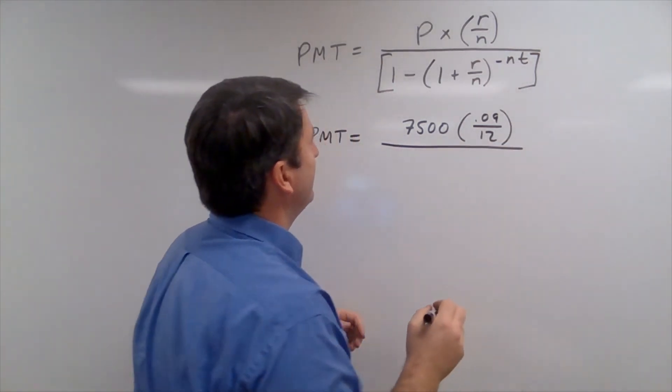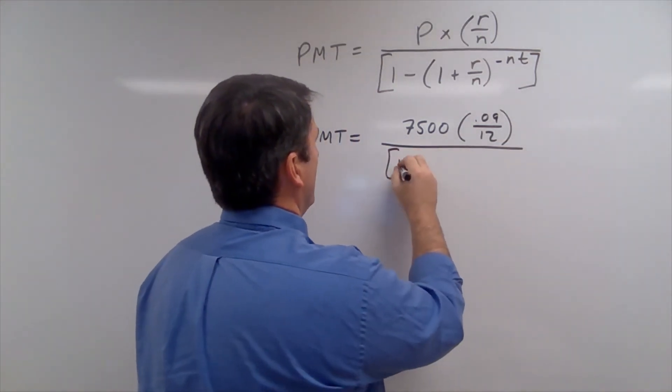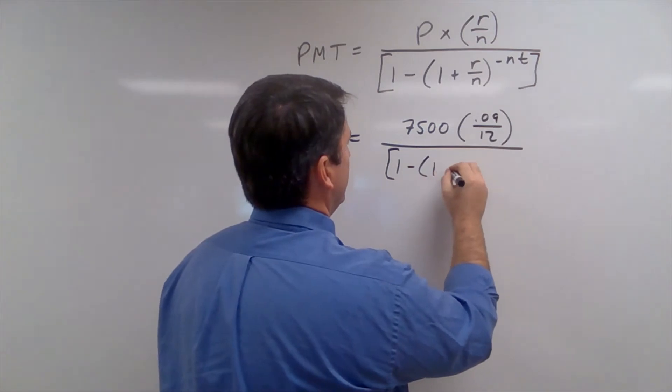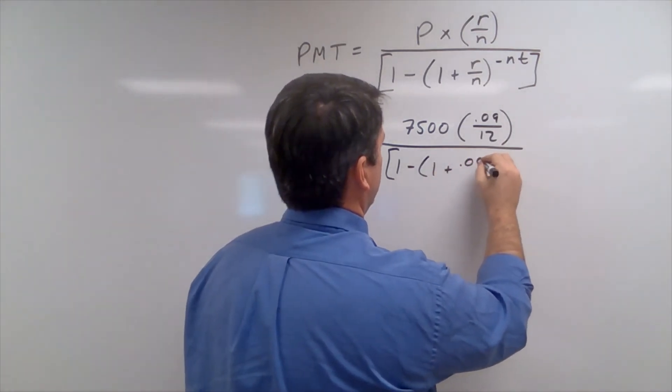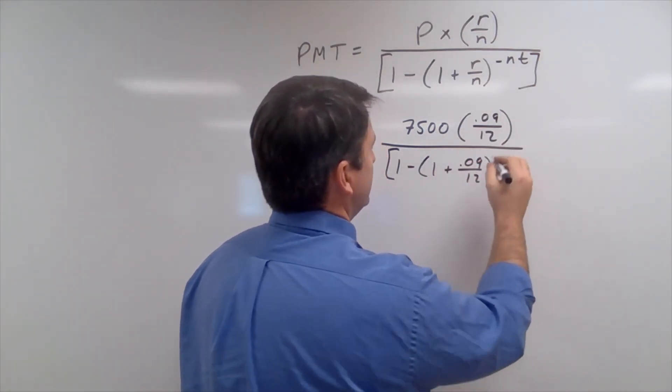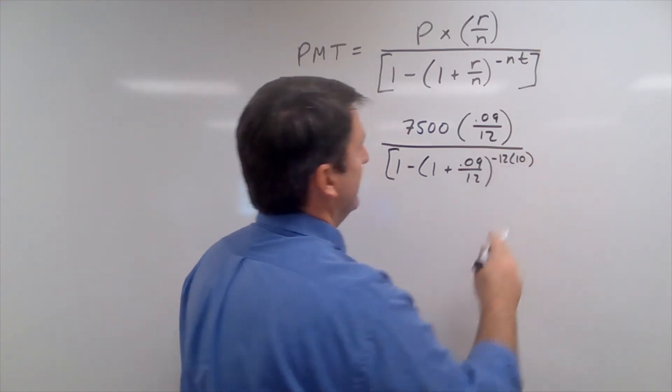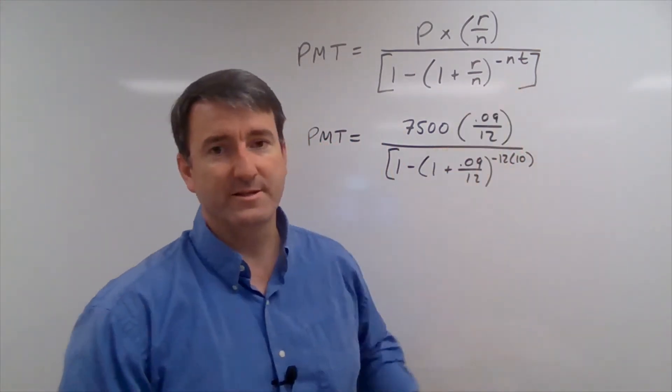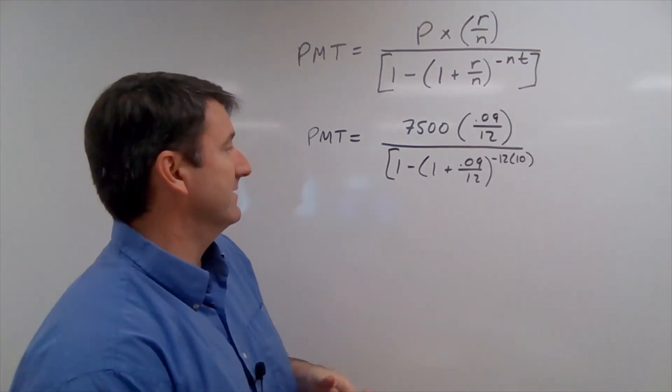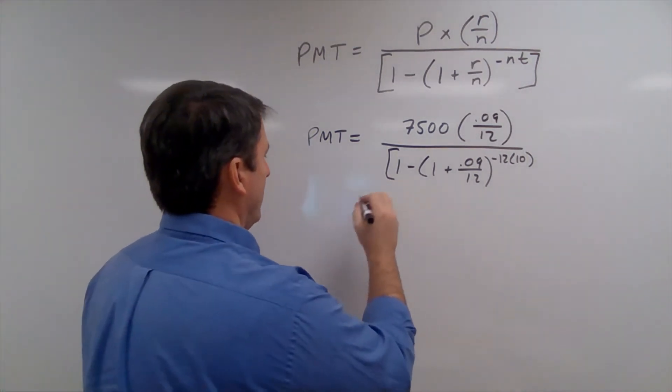And we're going to divide that now by 1 minus (1 plus 0.09 over 12) taken to the negative 12 times 10. Our loan term is 10, so that's our t in years.